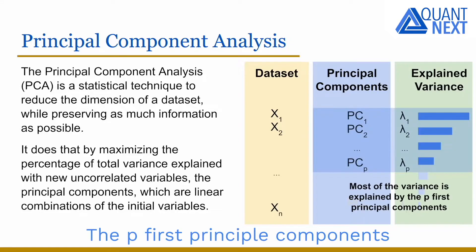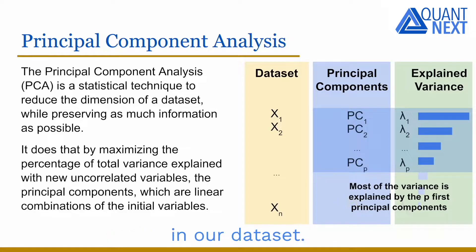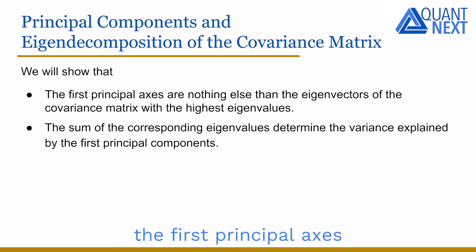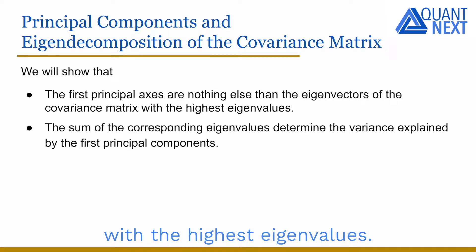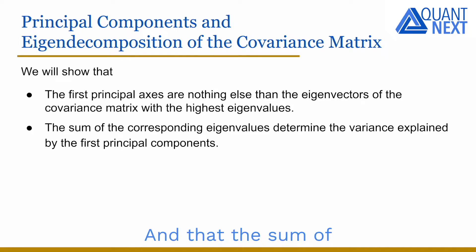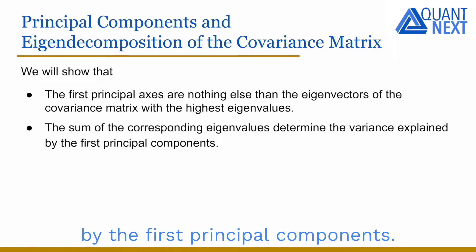The p-first principal components explain most of the variance in our dataset. We will show that the first principal axes, or coordinates, through the initial variables are nothing else than the eigenvectors of the covariance matrix with the highest eigenvalues, and that the sum of the corresponding eigenvalues determines the variance explained by the first principal components.